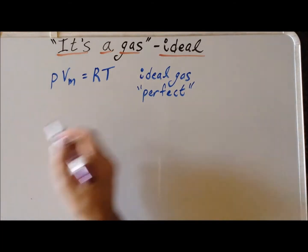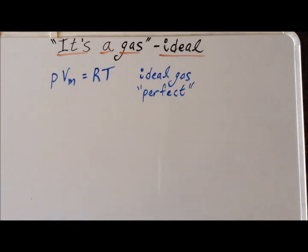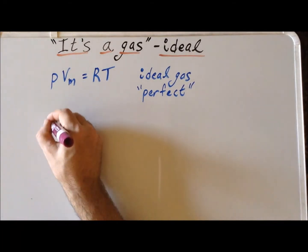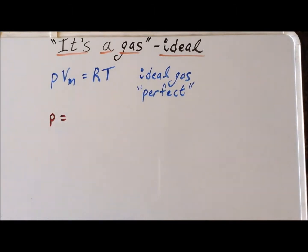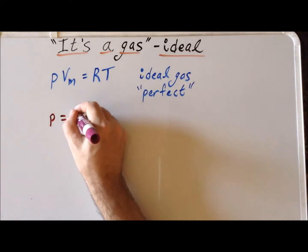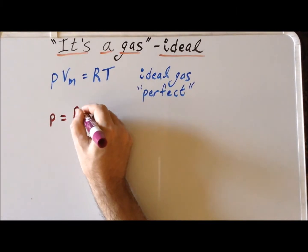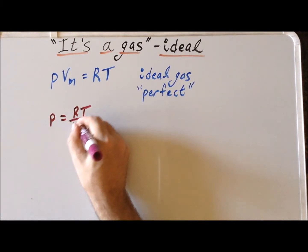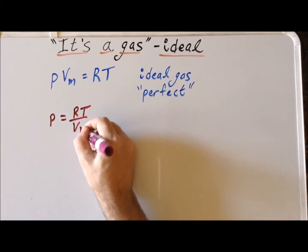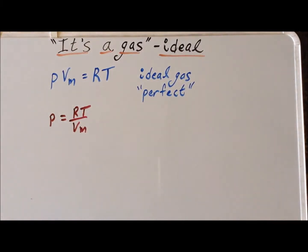If we divide each side of the equation by the molar volume, we get an expression where the pressure is on one side. This is often very useful to do. So we have the pressure is equal to RT divided by the molar volume Vm.